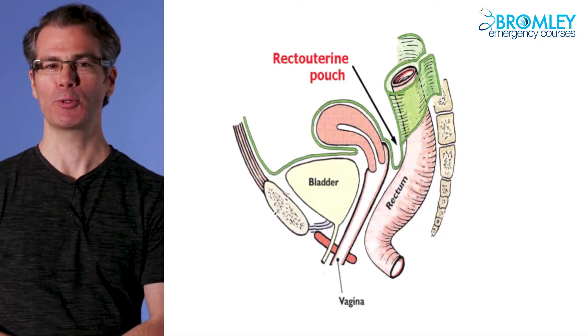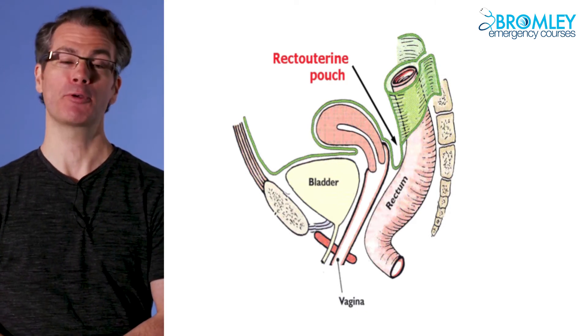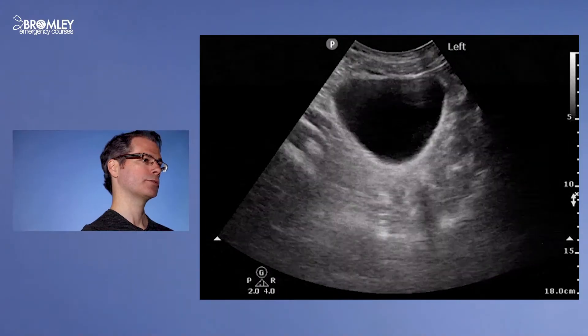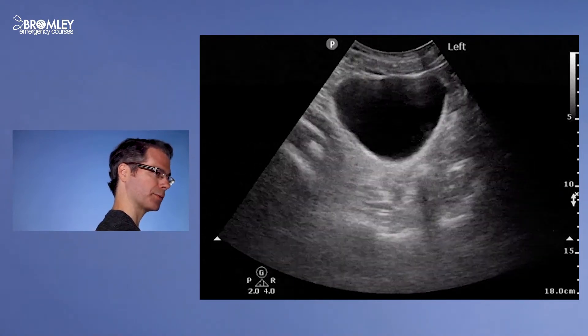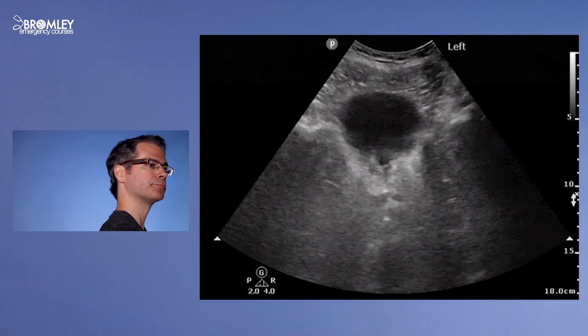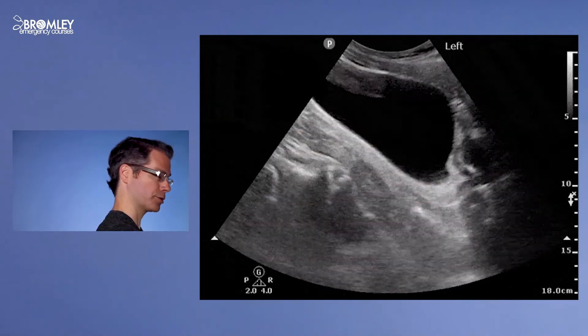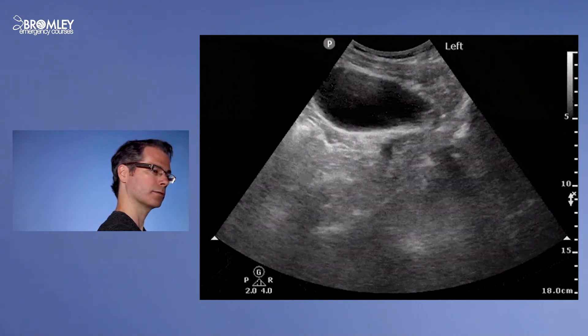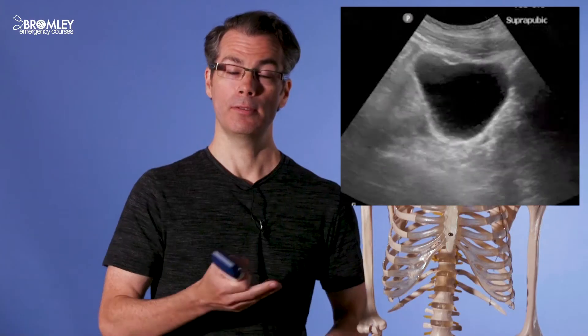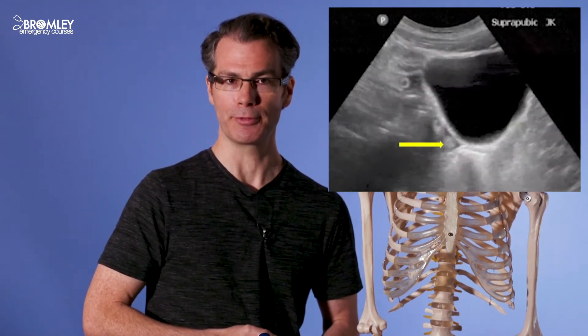In the pelvis, fluid tends to accumulate in the recto-uterine pouch in females, also known as the pouch of Douglas, or the recto-vesicle pouch in men. Here's an image of a normal pelvis in the transverse plane, fanning through from superior to inferior. Here's a video of a normal pelvis in the sagittal plane, fanning laterally. In this image we can see there is a small amount of free fluid, and again here in the sagittal plane, we can also see a small amount of free fluid.